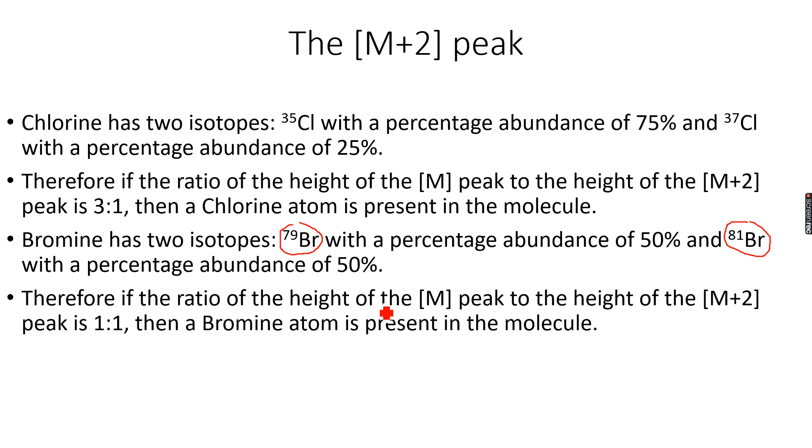I will have an M+2 peak because I can either have—let me do bromoethane this time, last time we did chloroethane—so I have CH3CH2Br with the Br-79 isotope, or I can have CH3CH2Br with Br-81.